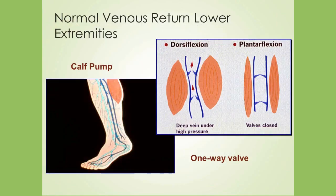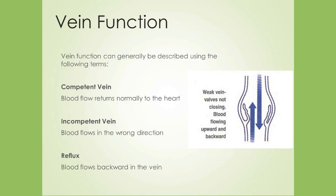Normal venous return is a result of two mechanisms. The calf muscle pump during ambulation contracts and compresses the venous compartment, propelling blood in the vein up towards the heart in a milking-like fashion. The one-way valves open when the calf muscle contracts and close when the calf muscle relaxes, which prevents the reflux of blood and distention of the veins. Approximately 90% of the venous return in the legs passes through the deep veins. A competent vein is one in which the valves function properly. An incompetent valve is defined as one in which blood flows retrograde, or in the wrong direction — defined as reflux.